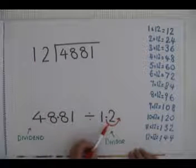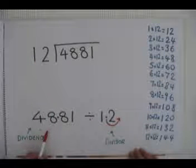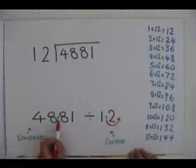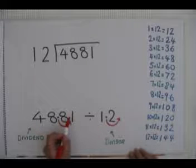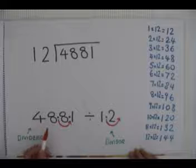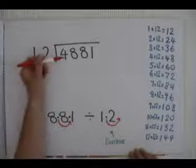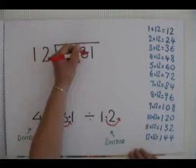Now whatever we do to the divisor, we have to do to the dividend. So we will multiply this one by 10 as well, or move the decimal point along one place, which will then make the dividend 488.1.